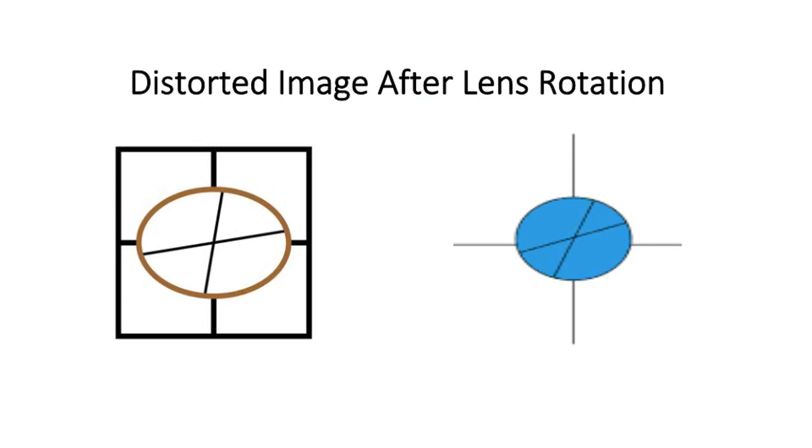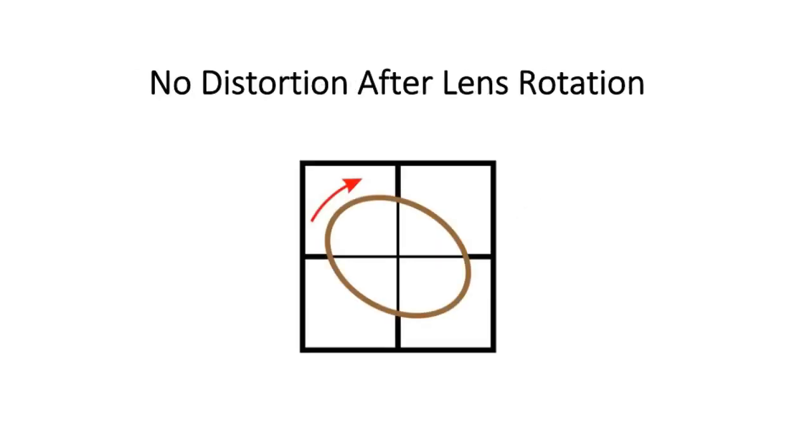If the image is distorted after lens rotation then it is a cylindrical lens. And if there is no distortion then it is a spherical lens.